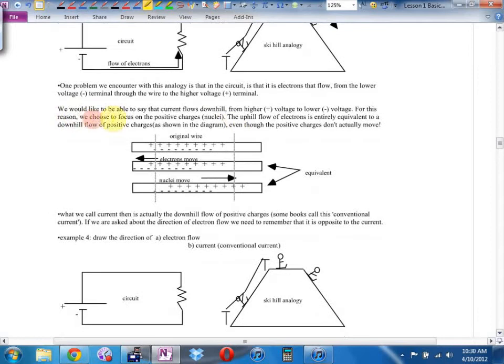But one problem we encounter with this analogy is in the circuit, it's the electrons that flow from the lower voltage to the higher voltage. But we like to say that current flows downhill. For this reason, we're going to pretend that positives are moving. When we look at a circuit, when we talk about the current, we actually say that current moves from positive to negative. Which sort of works. I guess, Emily, if a bunch of electrons move to the left, isn't that the same as a net gain of protons moving to the right? Because you're more positive to the right if some negatives have gone away.